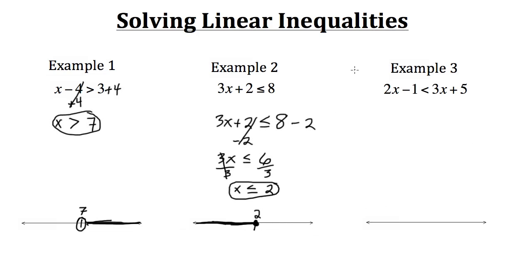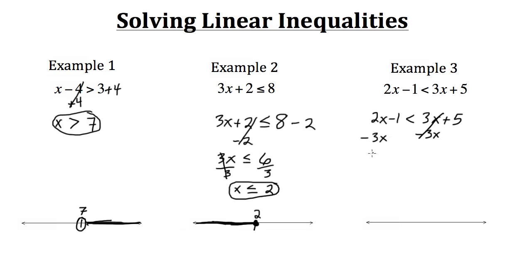In the next example we have 2x minus 1 is less than 3x plus 5. Treating this like an equal sign, we move the 3x over by subtracting it from both sides. That gives us 2x minus 3x, which is negative x, minus 1.